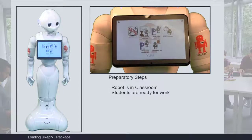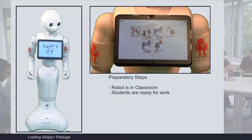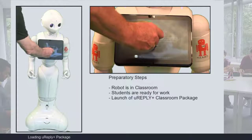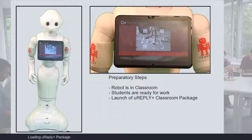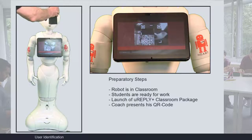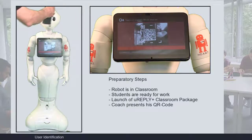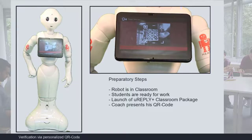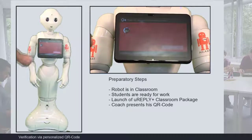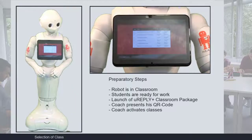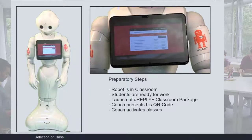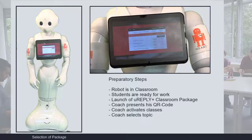Pre-requisite for the uReplyPlus classroom package is that the robot is in the classroom and uReplyPlus has been activated. The user identifies himself via his QR code. Once recognized, the code is verified successfully. Welcome, Jürgen. After successful identification, one has to select one's class and within the class the particular package. Then the robot takes over.